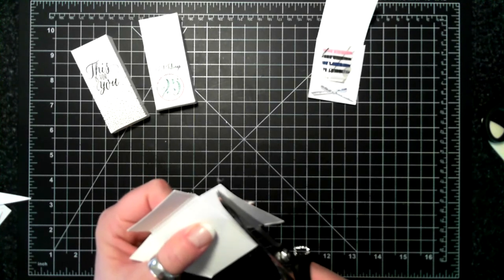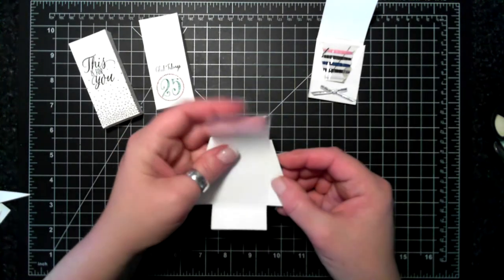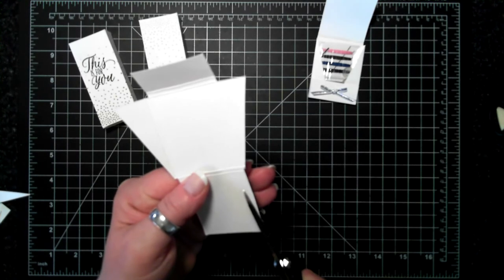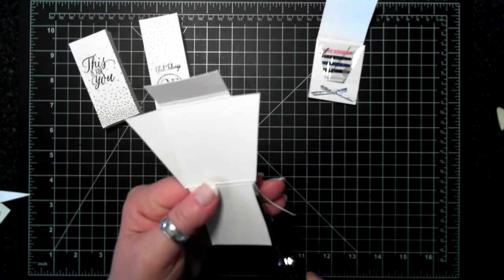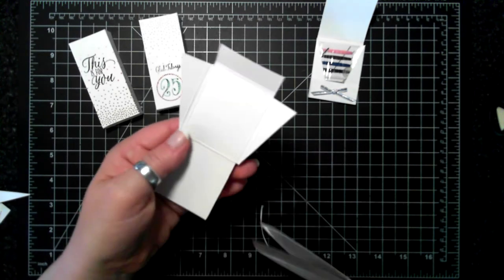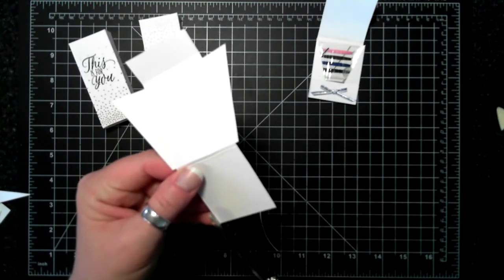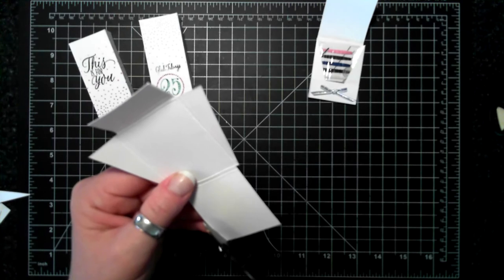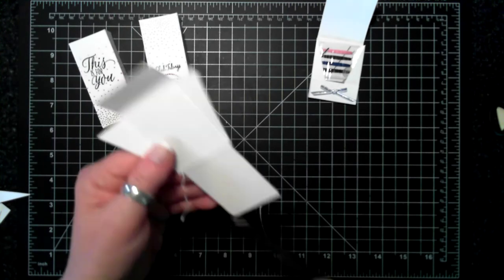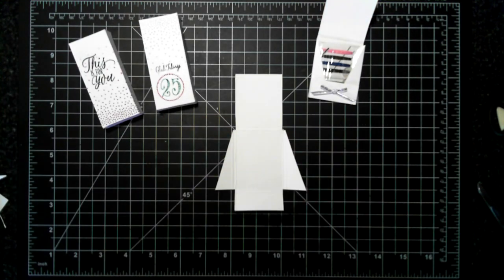Stampin' Up! used to sell them. That's why I have them but they don't sell them anymore. But I have seen them in the sewing store. They're actually, I think, ribbon scissors. And yeah, you're paying like 35 bucks Canadian for that, but they are awesome for box making. And look how sharp that is because I'm able to, without bending the paper anything, I'm going to use glue dots.